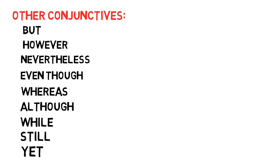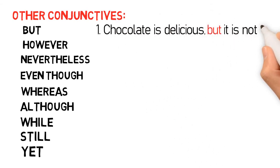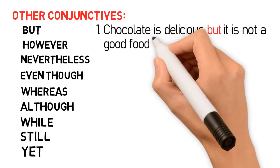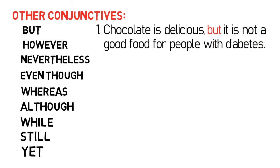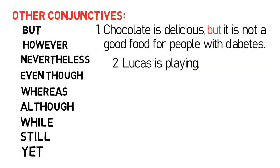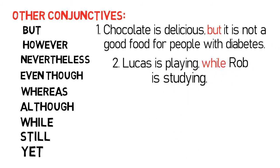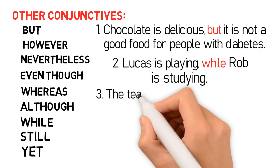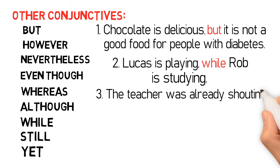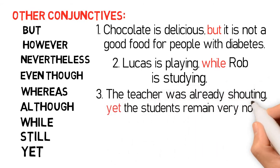Let us consider these following examples. Number one: 'Chocolate is delicious, but it is not a good food for people with diabetes.' Number two: 'Lucas is playing while Rob is studying.' Number three: 'The teacher was already shouting, yet the students remain very noisy.'